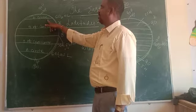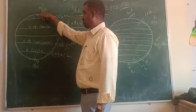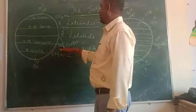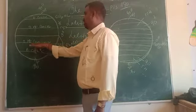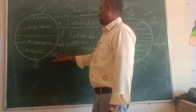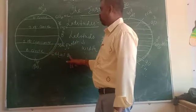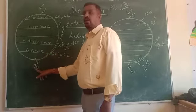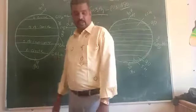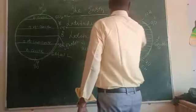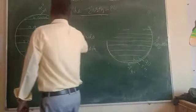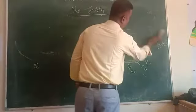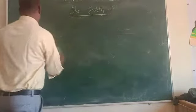The North Pole is 90 degrees north. In the Southern Hemisphere: 23.5 degree south latitude is called the Tropic of Capricorn, 66.5 degree south latitude is called the Antarctic Circle, and the South Pole is 90 degrees south. This is all about latitudes. Now we shall discuss the next topic: longitudes.